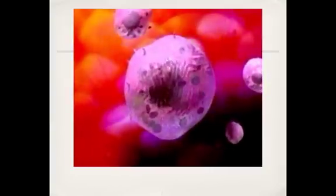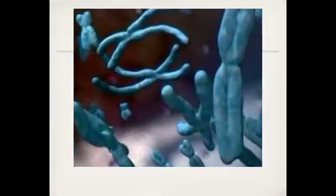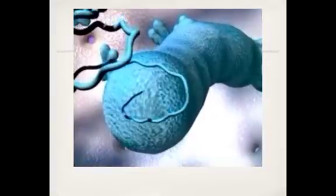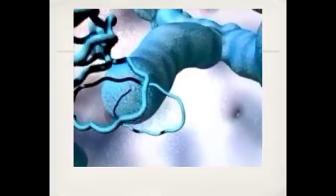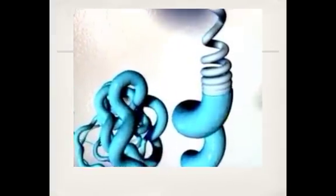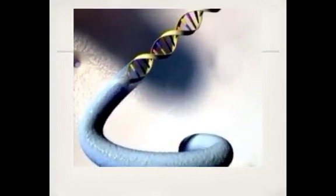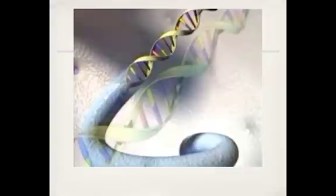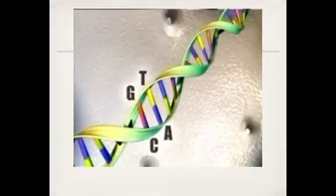If we could journey inside ourselves, into a cell, we would see 23 pairs of chromosomes, packed into a nucleus. Each chromosome contains a long coil of DNA. If all the chromosomes were unwound, the DNA in just one of our cells would stretch six feet long. The DNA double helix contains four kinds of building blocks. An A always pairs with a T, a C with a G.